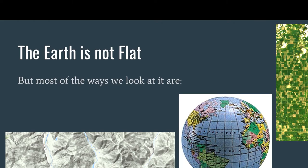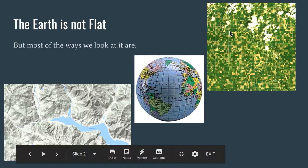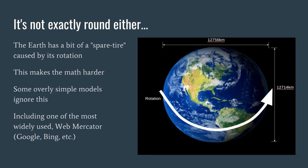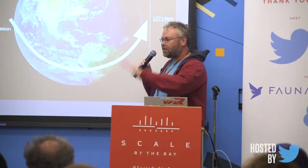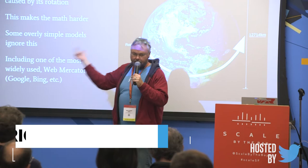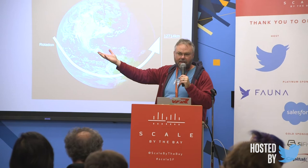The Earth is not flat, but it's also not a sphere. It's a lot more complicated than that. The Earth spins and it's fatter in the middle. That's level-three understanding — it's not flat, it's not round.